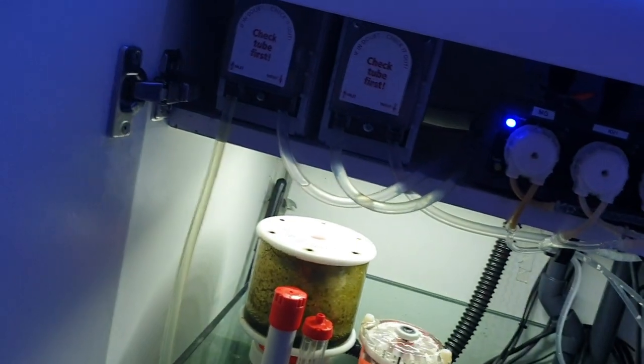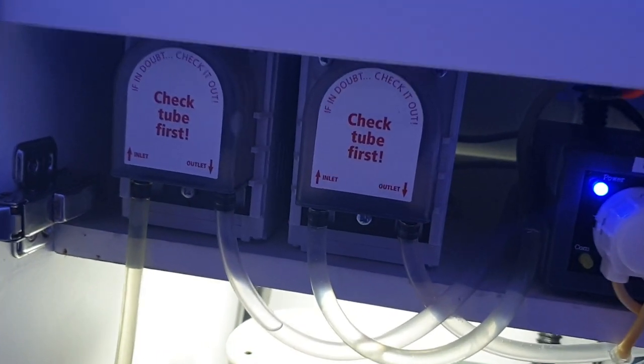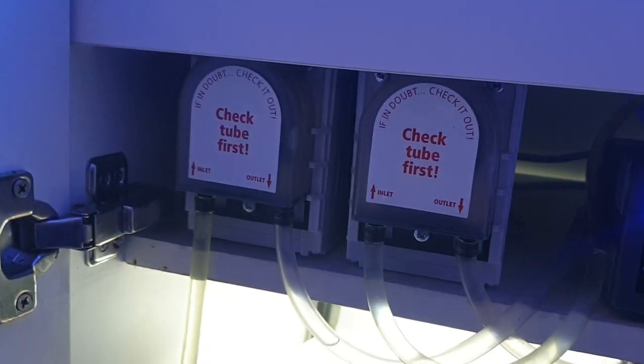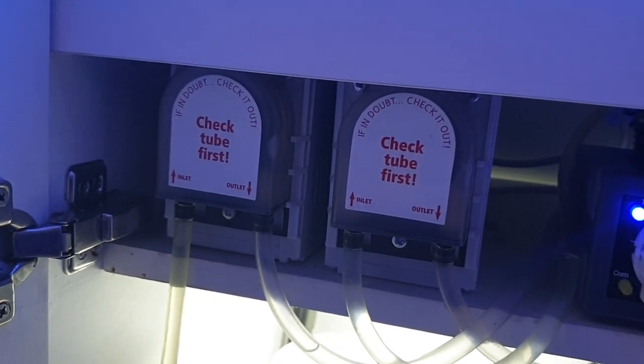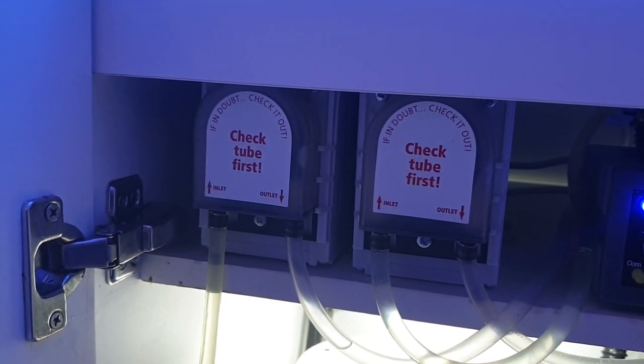Inside my sump, we have two peri pumps. These are, I don't think they've got the manufacturer on there, I can't remember, they are basically air conditioning condensate removal pumps. They're not rated to be on constantly, but you can still run them for quite some time.